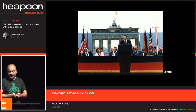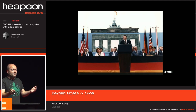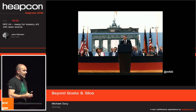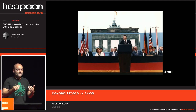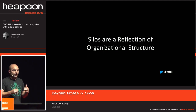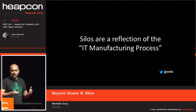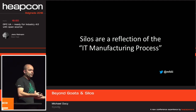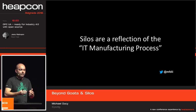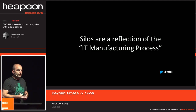Of course, that references Reagan's speech in front of the Berlin Wall — Mr. Gorbachev, tear down this wall. It's important to understand that as we made this cry to tear down our silos, we're asking for something very particular: we want to tear down our organizational structure, because silos are just a reflection of how we've decided to organize ourselves and our work. More importantly, silos are a reflection of the IT manufacturing process.